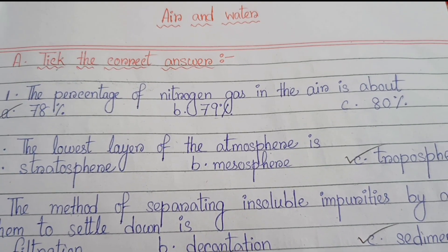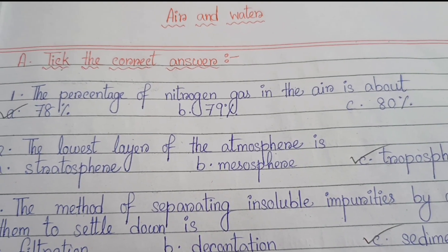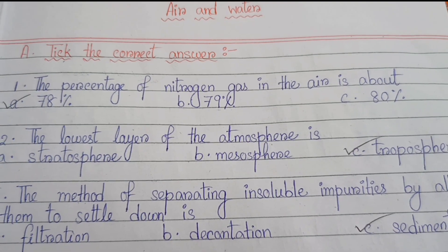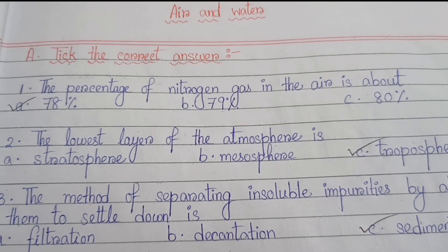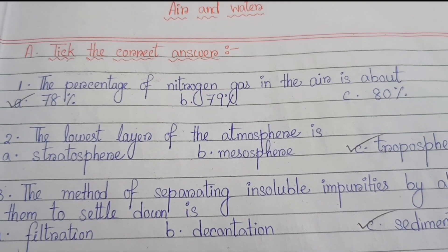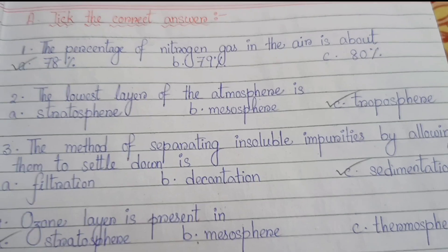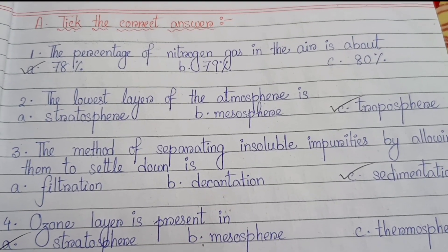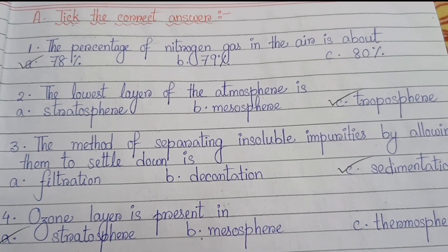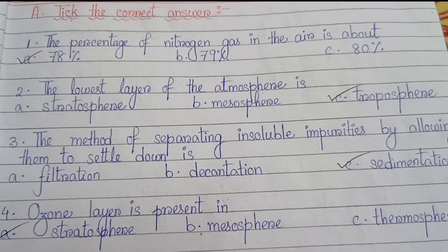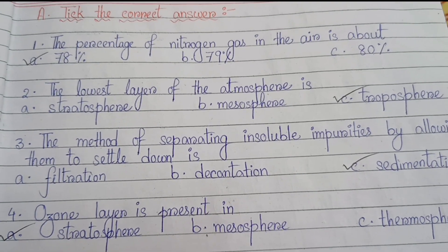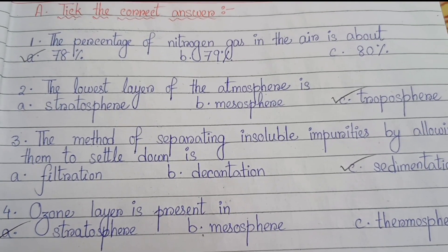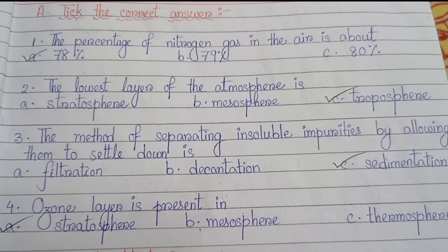Number 8 is the correct answer. Number 1: the percentage of nitrogen gas in the air is about 78%, 79%, or 80%? The answer is 78%. Number 2: the lowest layer of the atmosphere is (a) stratosphere, (b) mesosphere, (c) troposphere. The answer is (c) troposphere.